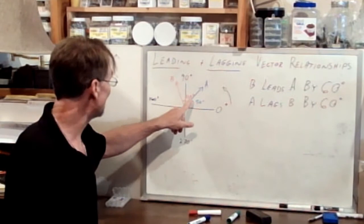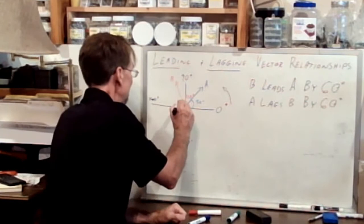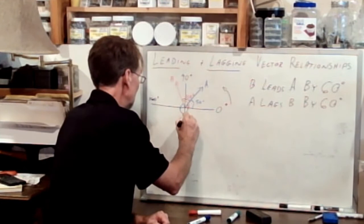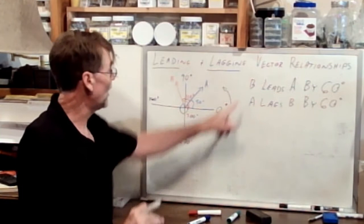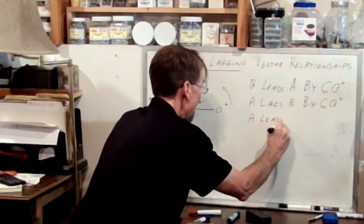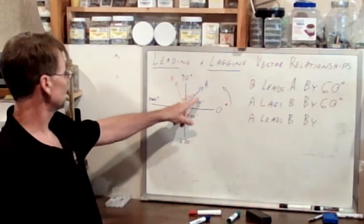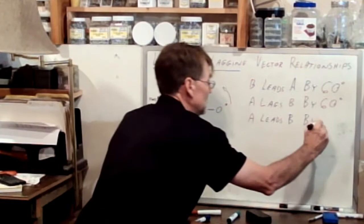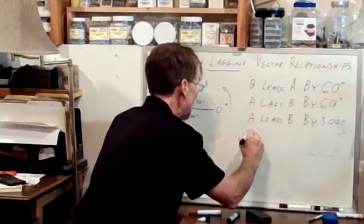And so perhaps the difference between the two vectors is not this 60 degrees right here. Perhaps the actual angle of interest is from here all the way around to there, which is 300 degrees. And so while these statements are true, there are two more that are also true. Because it may be said that A leads B by 300 degrees, and finally one last statement: we could say that B lags A by 300 degrees.